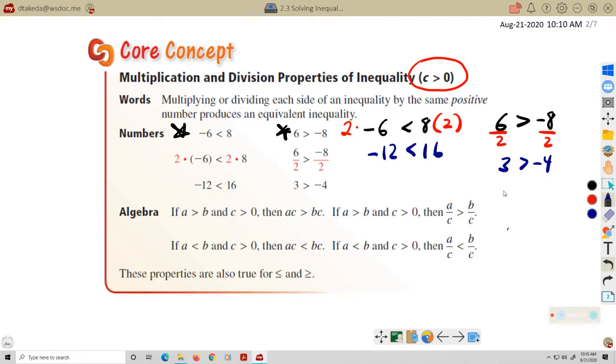When it comes to division, let's look at this example. 6 is greater than negative 8, a true statement. If I divide both sides by a positive number, in this case a positive 2, I left 3 is greater than negative 4. Still a true statement. So essentially what this is saying is, if we're multiplying or dividing by a positive number, just keep everything the same, just like you've been doing it. We'll talk about the exception in a few minutes.